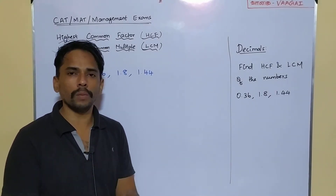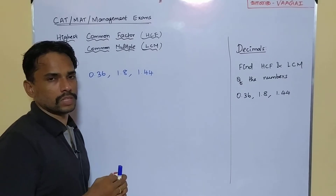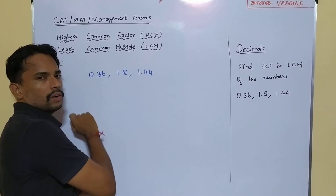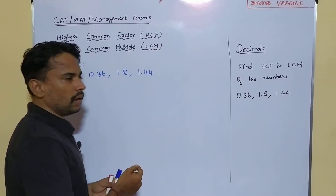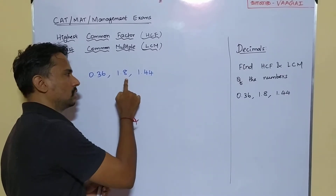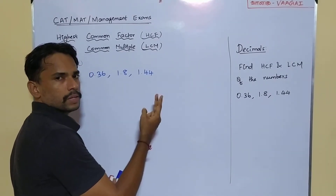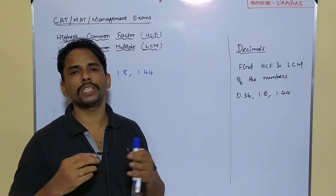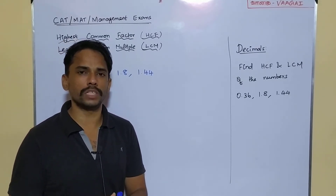If we are given decimals, by what approach can we find HCF or LCM? Let us observe these three numbers. For 0.36, after the decimal point we have two digits — two decimal places. For 1.8, after the decimal point we have only one digit. And for 1.44, like the first number, we again have two decimal places. So we see: two places, one place and two places. The maximum of them is two decimal places.